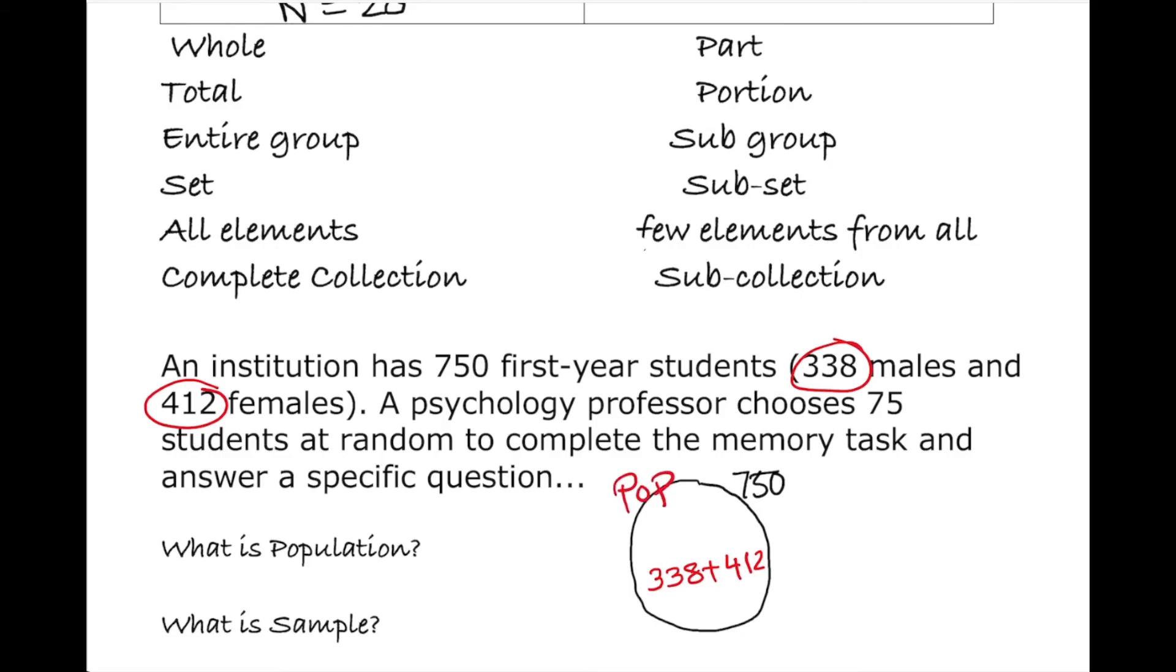Now what about the sample? So from this, I would like to see my sample. So sample is 75 students, 75 students. So sample is just 75 students. So again, this one is the entire group, out of this is 338 plus 412 students, and that's 750, that's a population, and that would be the sample.